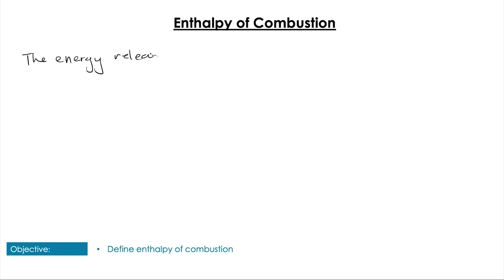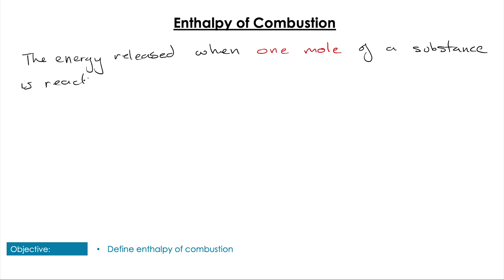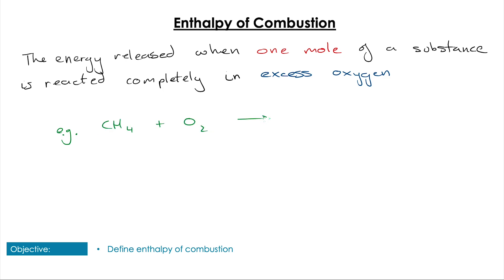Before we get stuck into data analysis, we want to have a look at the enthalpy of combustion — firstly defining it, and then the method of how to calculate it. The enthalpy of combustion is the energy released when one mole of a substance is reacted completely with excess oxygen. We can look at an example of the combustion of methane — in any enthalpy of combustion equation there's always going to be only one mole of the substance we are combusting.